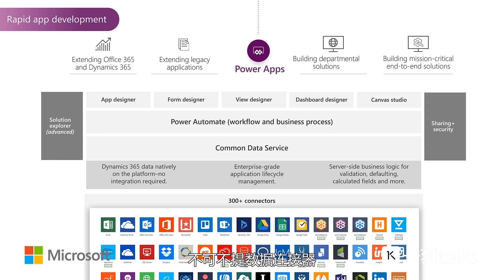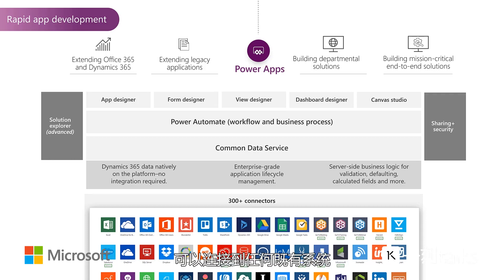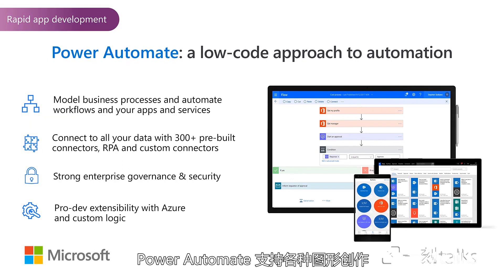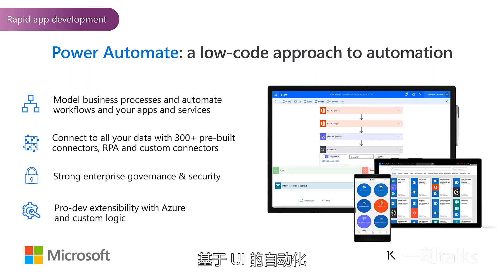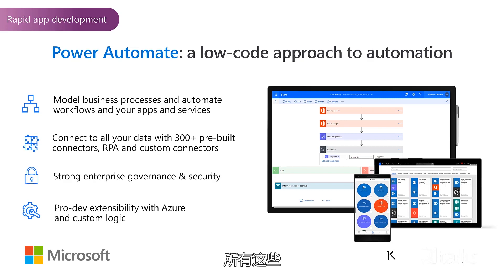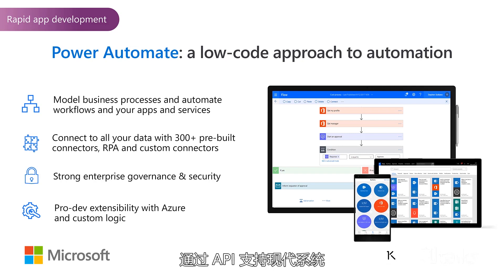One of the things we always go back to about Power Apps is the data connectors — over 300 of them — making it so that when you build your Power Apps, you can connect to all your existing systems without fracturing your IT landscape. And when we talk about rich workflows and automation capabilities, that is through Power Automate, a key ingredient of the Power Platform. It supports all kinds of graphical authoring of API-based automation, UI-based automation or robotic process automation, as well as AI-driven understanding of analog content like documents, text, videos, or photos. And this rich single platform for automation supports modern systems through API as well as legacy applications through UI automation.